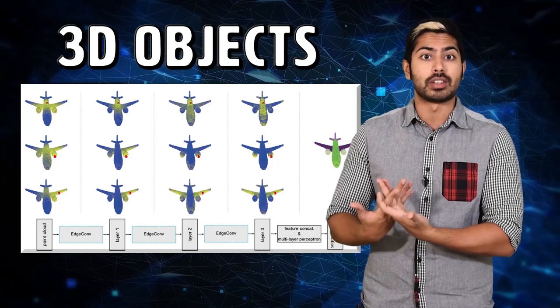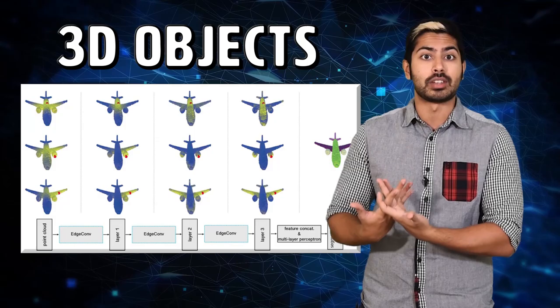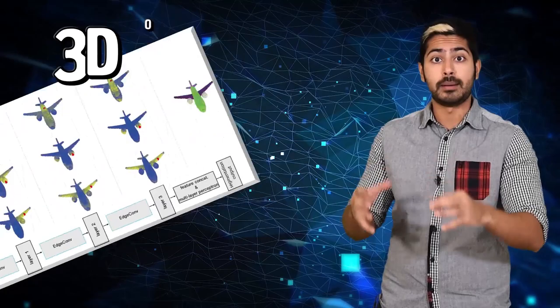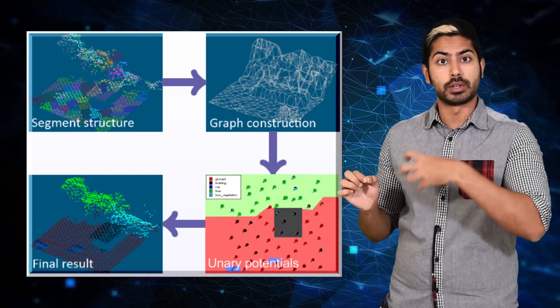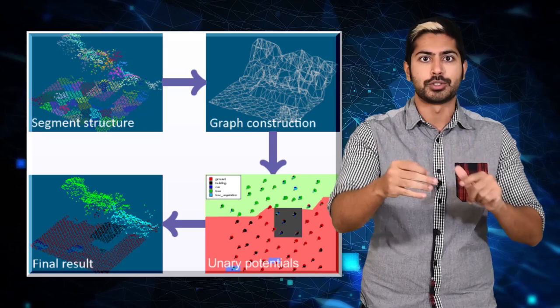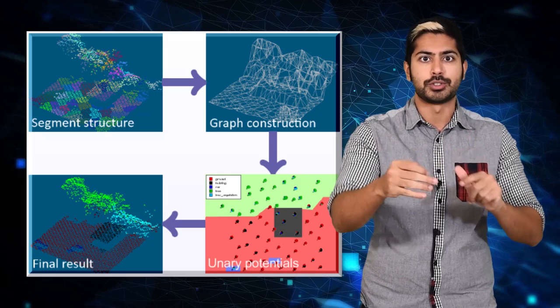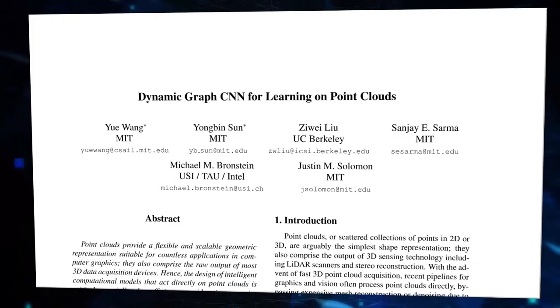Pretty dope, right? But social network graphs aren't the only type of Euclidean datasets. We can also use GCNs on 3D objects if we consider them as point cloud data. Point clouds are just a set of points represented in 3D by their XYZ locations. It's what hardware like the Kinect generates. It's computing not just pixel data, but depth as well. So there's a third dimension involved. If we consider the points in a point cloud as nodes in a directed graph, we can apply GCNs to them.